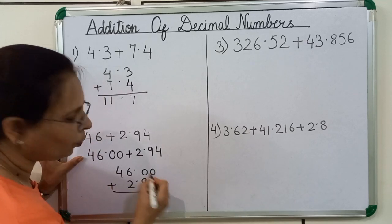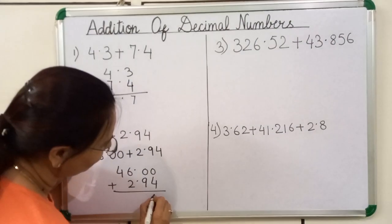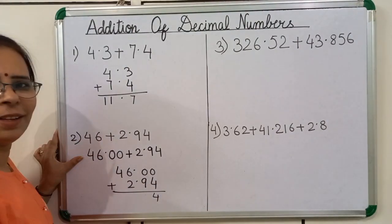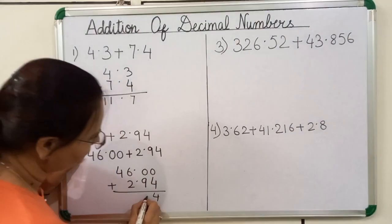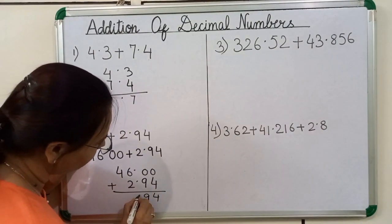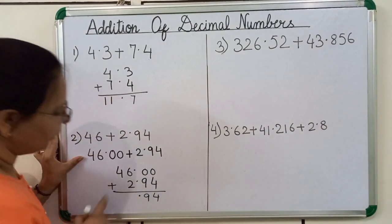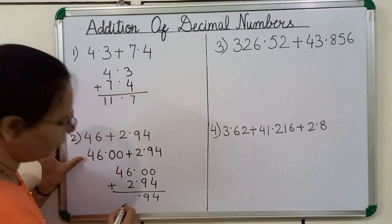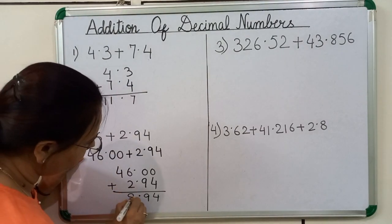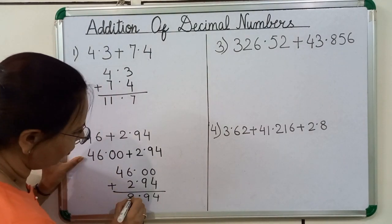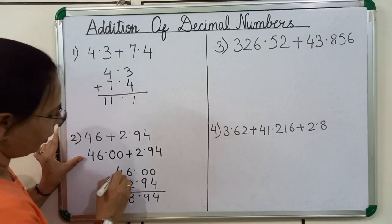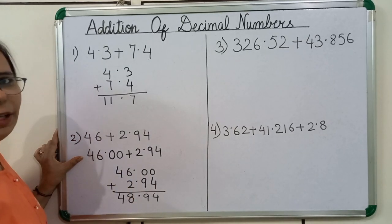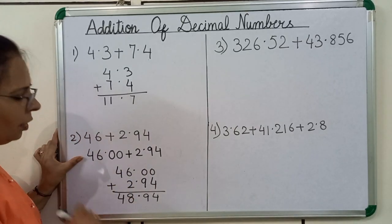0 plus 4 is equal to 4. 0 plus 9 is equal to 9. Now we will put the decimal point. 6 plus 2 is equal to 8. So 48.94 is the answer.